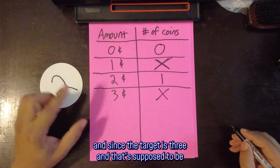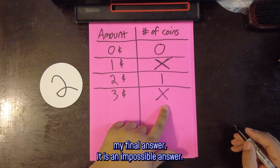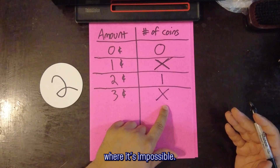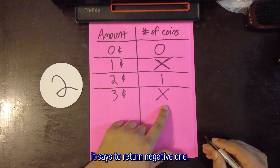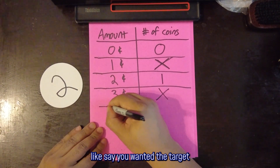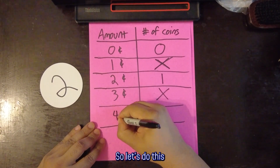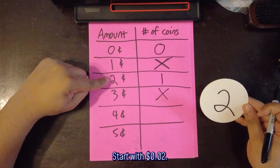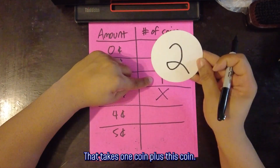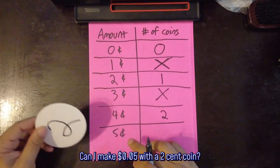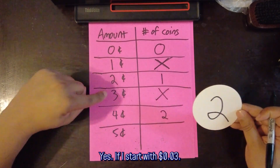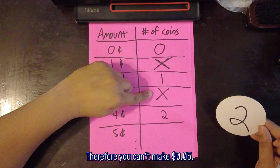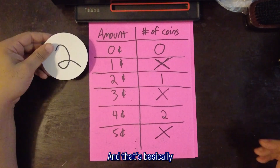If the target were actually 5 cents instead: 4 cents — yes, start with 2 cents, one coin plus this coin equals two. 5 cents — start with 3 cents, but you can't make 3 cents, therefore you can't make 5 cents. That's basically how it works for impossible sub-problems propagating up.